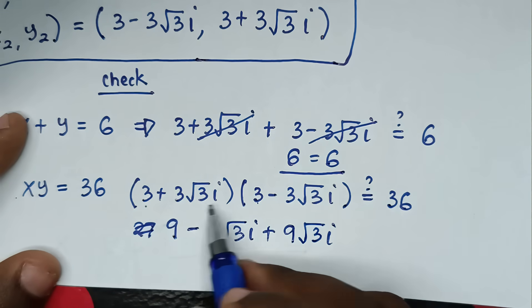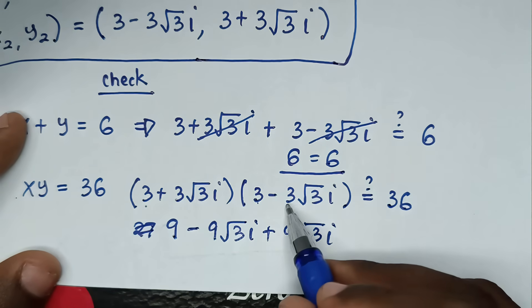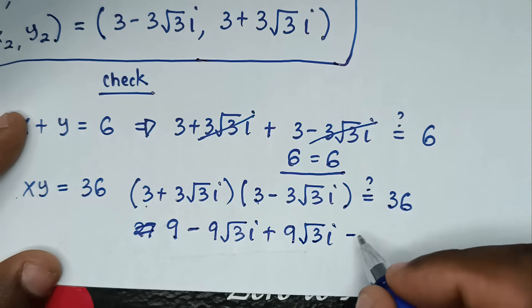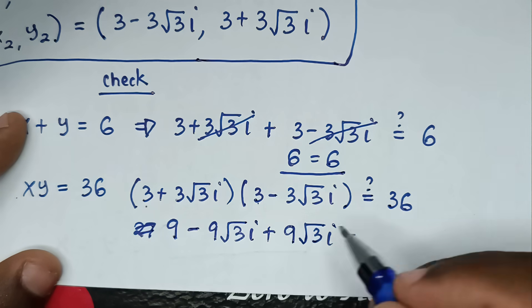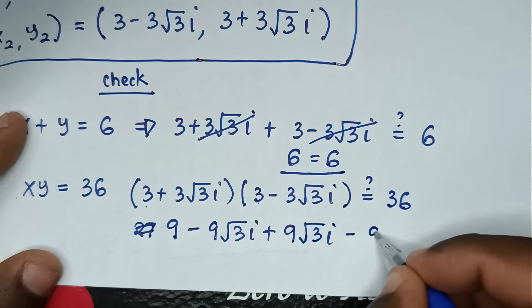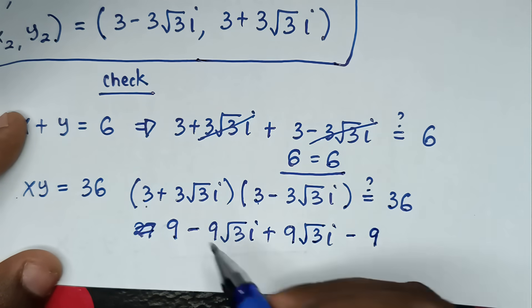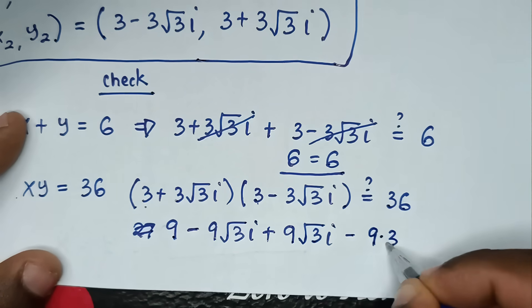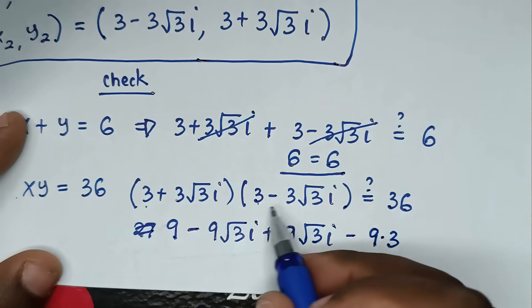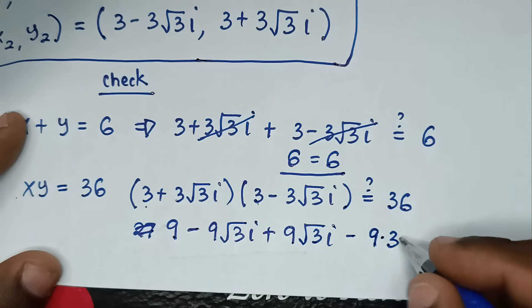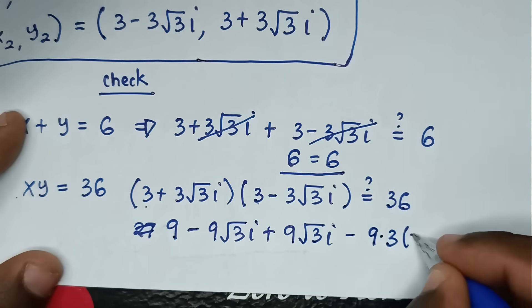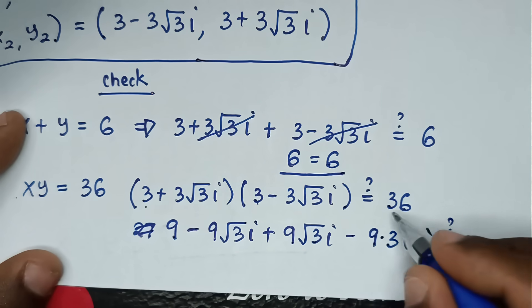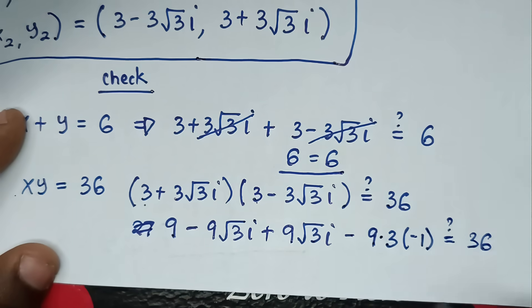Then 3 square root of 3i times negative 3 square root of 3i: negative 3 times 3 is 9, square root of 3 times square root of 3 is 3, and i times i is i squared which is negative 1.